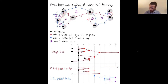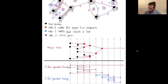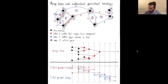At height two I have one new connected component corresponding to a new zero-dimensional bar that begins, but I also have two merge events and those two merge events correspond to two connected components dying. At height three, three connected components die. At height four there is a merge event corresponding to this connected component dying.